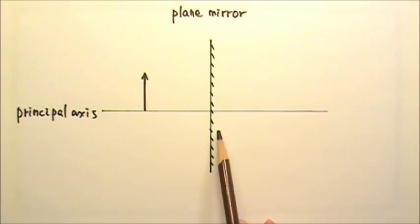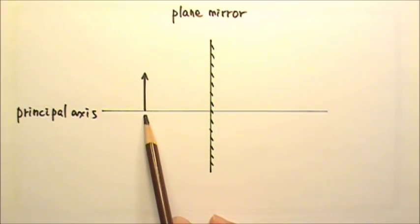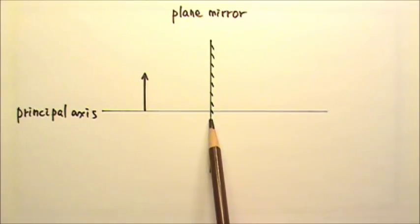This is the object in front of the mirror. We usually draw an arrow to represent the object. So this arrow may represent a vase of flowers or whatever. Now let's find the image of this object produced by the mirror.